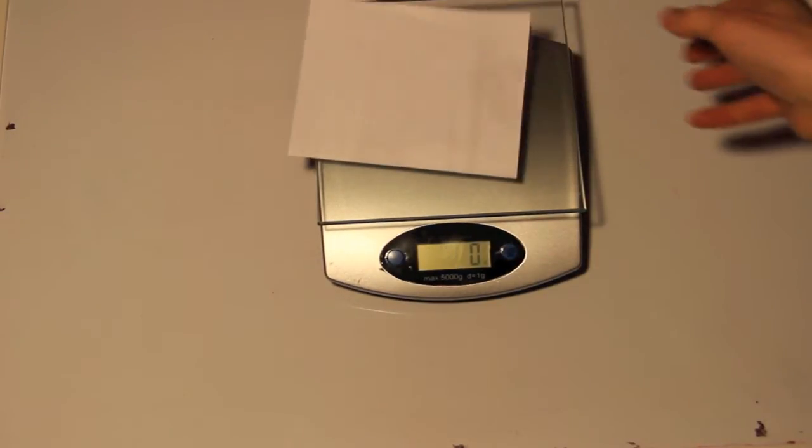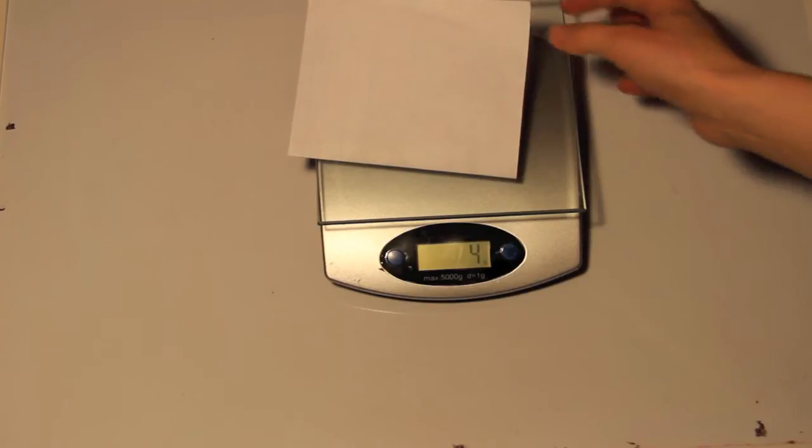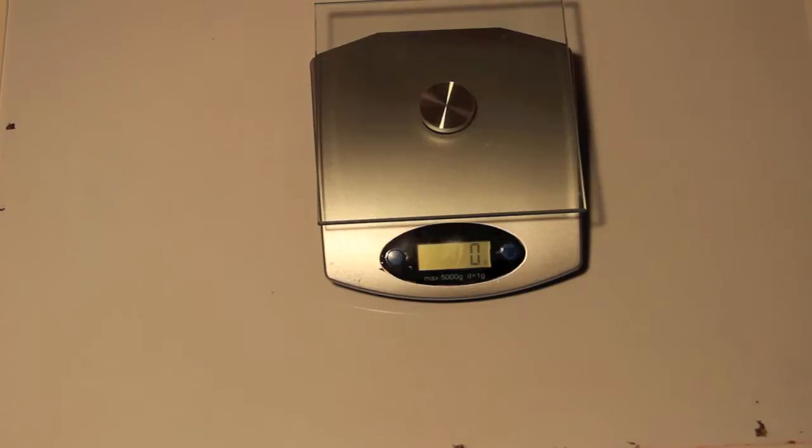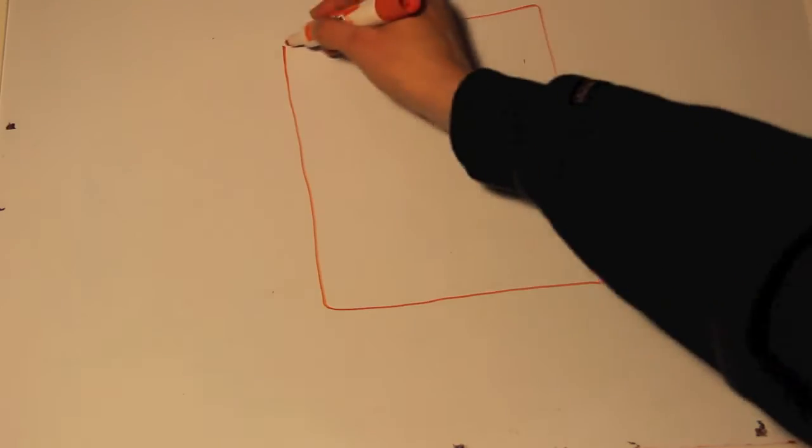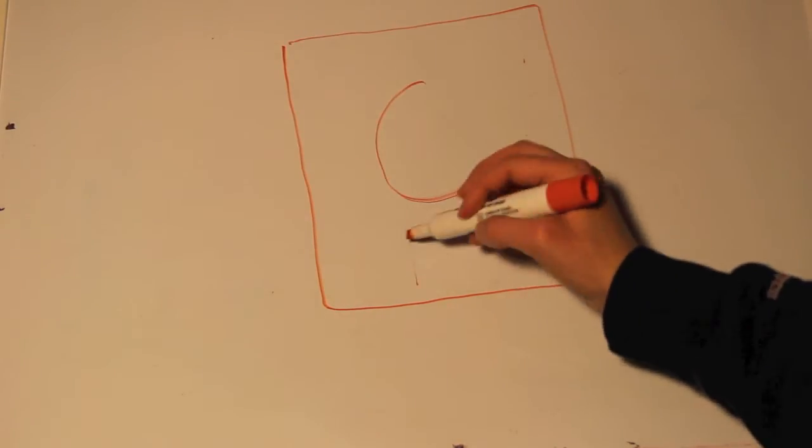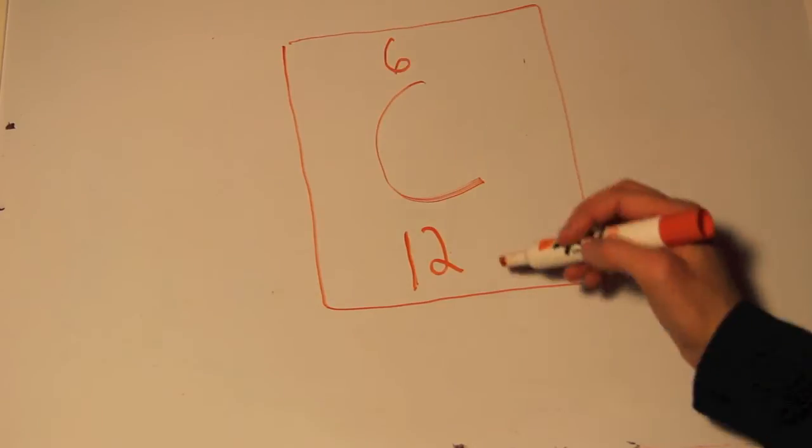To determine how many atoms are in the piece of paper, we can weigh the paper and find out that it's about 4 grams. We divide this weight by the weight of the atom. Unfortunately, this scale does not weigh individual atoms, so we will have to turn to the periodic table.